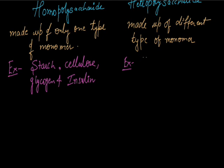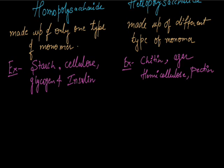The examples of heteropolysaccharide are chitin, agar, hemicellulose and pectin. These are also polysaccharides but having more than one sugar molecule. Now we will discuss first some homopolysaccharides.